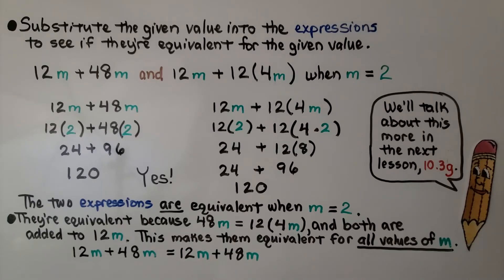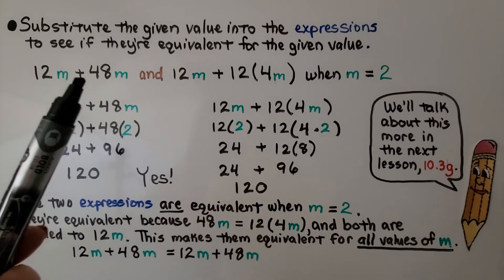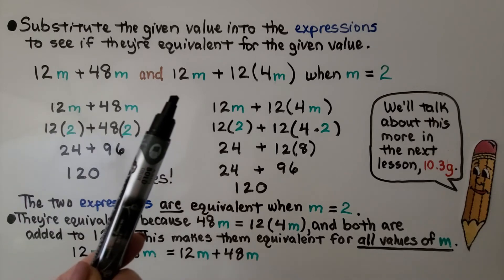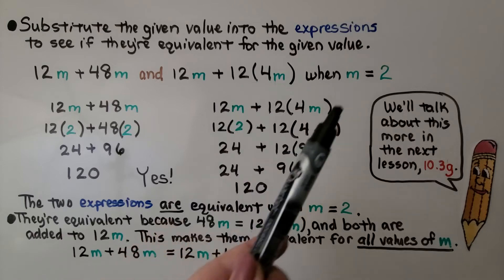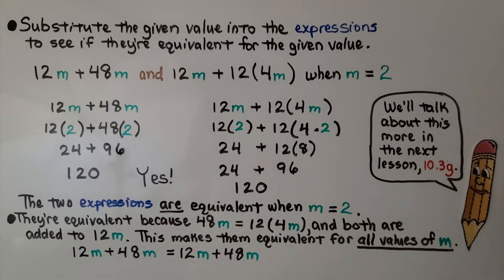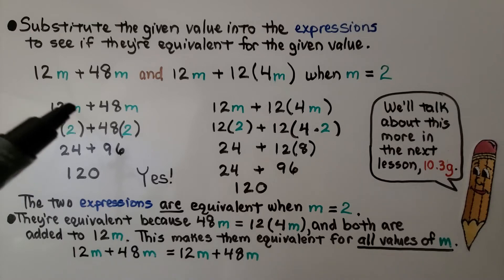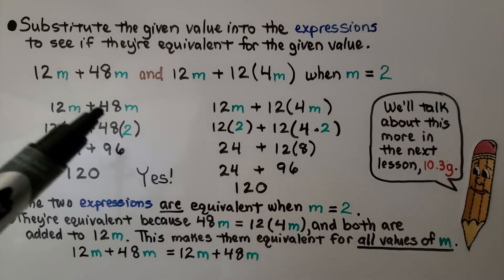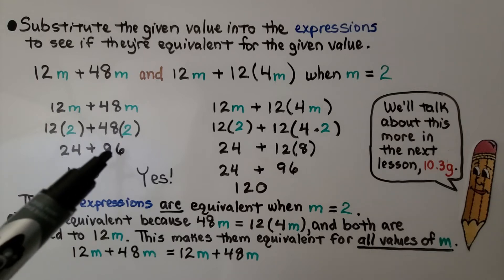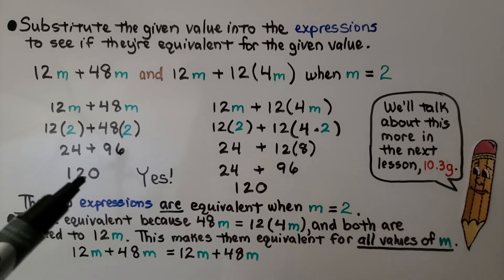Here it's telling us to substitute the given value into the expressions to see if they're equivalent for the given value. We have 12m plus 48m, and our other expression is 12m plus 12 times 4m, when m is equal to 2. We substitute 2 in for m: 12m is 12 times 2, that's 24. 48m is 48 times 2, that's 96. We get 120.